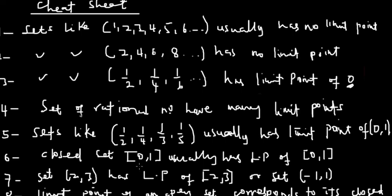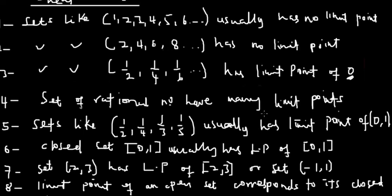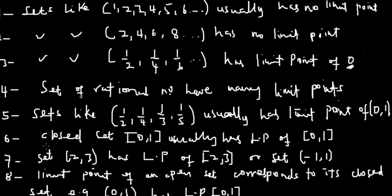Closed sets such as [0, 1] have limit points of zero and one, which are also closed. You can identify a closed set from the bracket notation. An open set like (2, 3) has a limit point that is the closed set [2, 3]. These sets have a specific limit point as described in the cheat sheet.